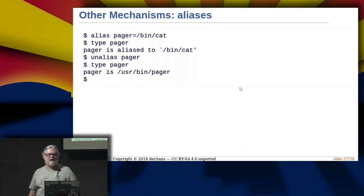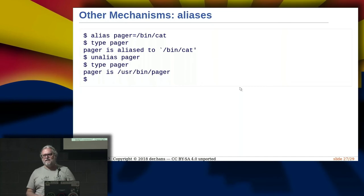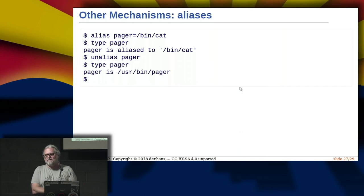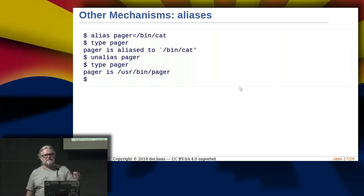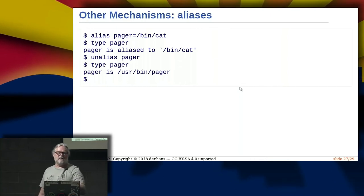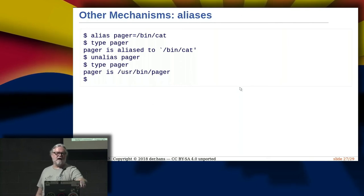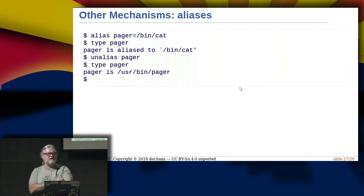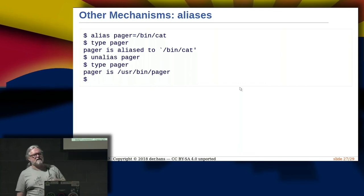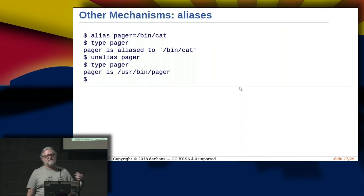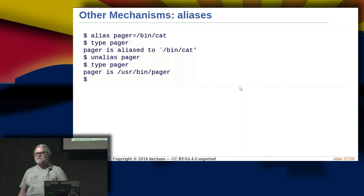Sensible-utils provides sensible-pager, sensible-editor, and sensible-browser — little scripts that do something similar to etc/alternatives but from a different package with some wrapping. For instance, crontab -e uses sensible-editor rather than etc/alternatives. For aliases, I can set 'alias pager=/bin/cat' — my shell will see the alias and use it instead of the filesystem. I can use the 'type' command to see what would run, and unalias to remove it and go back to /usr/bin/pager.